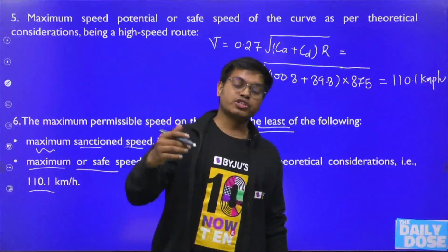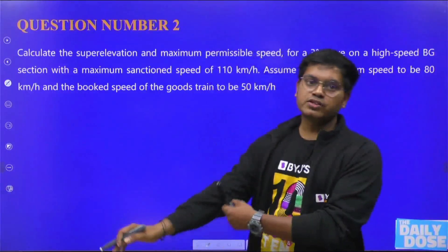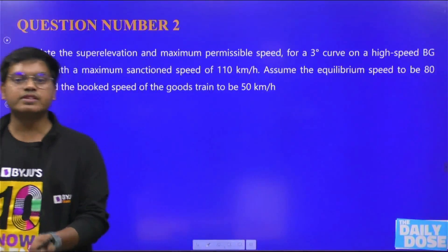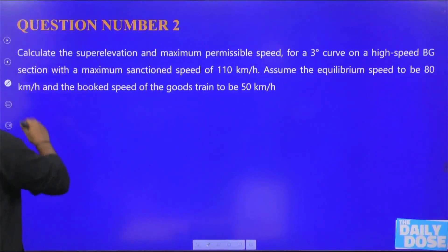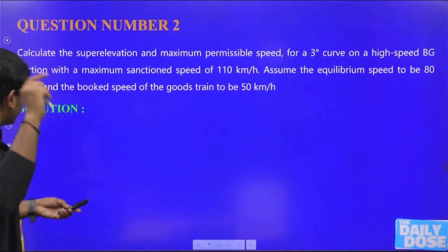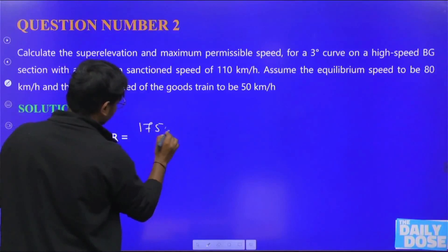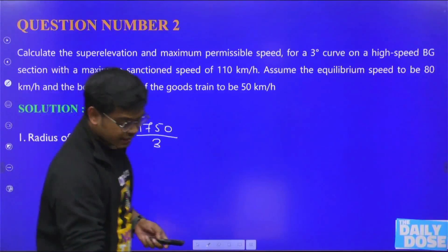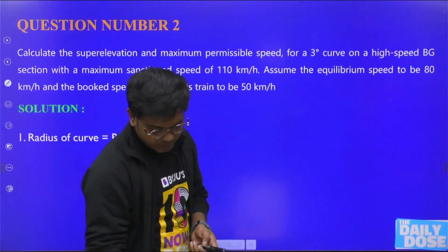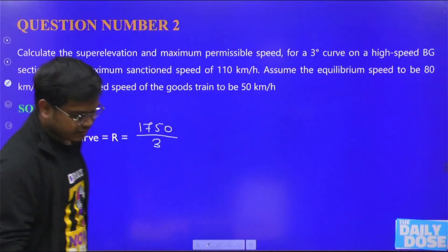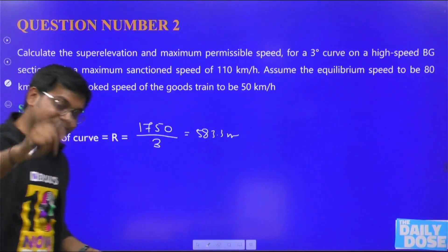Now let's solve the second question where limits are exceeded. The question is the same except the curve is three degrees instead of two. The radius is: 1750 / 3 = 583.3 meters.